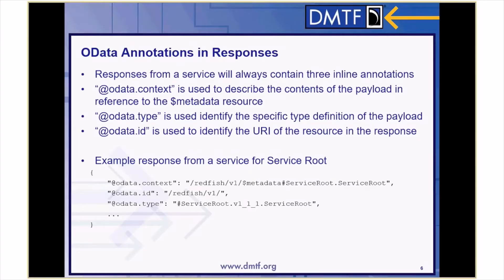Responses from a service will always contain three OData-specific inline annotations. At odata.context is used to describe the contents of the payload in reference to the dollar metadata resource. At odata.type is used to identify the specific type of definition of the payload. At odata.id is used to identify the URI of the resource in that response. In this example of a response from a service for service root, the at odata.context property is set to redfishv1 dollar metadata hash service root dot service root. As a matter of convention, the unversioned entity of the resource is used after the hash in the context data. The at odata.id property is set to redfishv1, which is the URI the client used to get this payload. The at odata.type property is set to hash service root dot v111 dot service root, meaning that the response follows the service root entity definition in the service root dot v111 namespace.